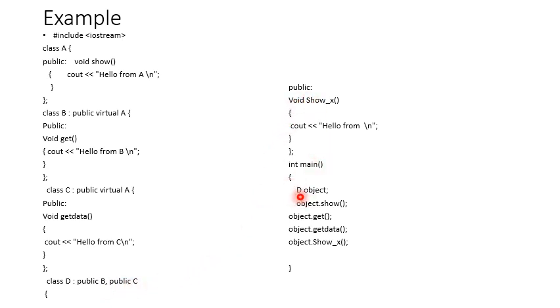In main method, we create an object. object.show() is the method from class A. object.get() is the method from class B, object.getData() is the method from class C, and object.show_x() is the method from class D. That is the resolution of hybrid inheritance using virtual functions.